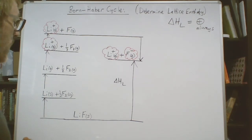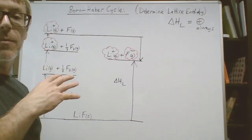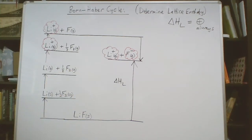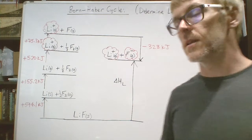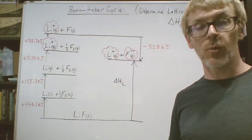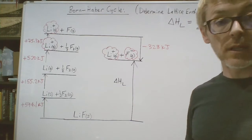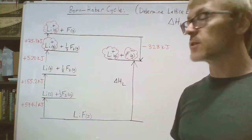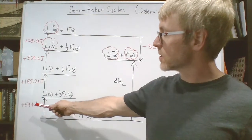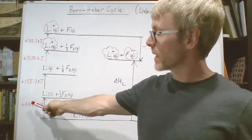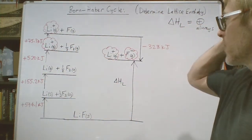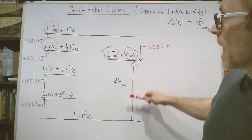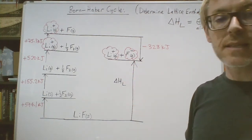So we just need to know what the energy values for these steps were and we can calculate delta H L. So I'm going to find these values in a table. By the help of a table of values which in any assessment would be provided to you, you just have to know what you're looking for. I've entered the numerical values for these energy changes. Every arrow that points up is a positive value. Every arrow that points down is a negative value. And the missing gap which points up always is the lattice enthalpy that we need.